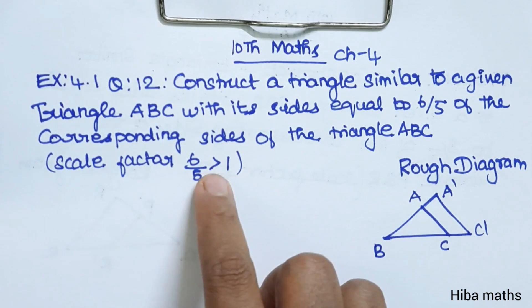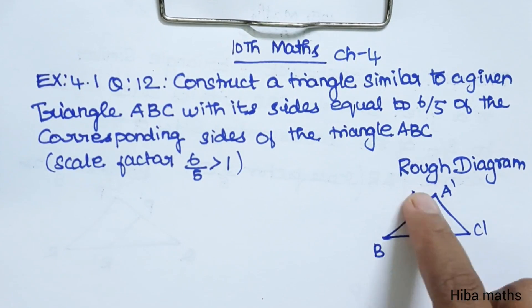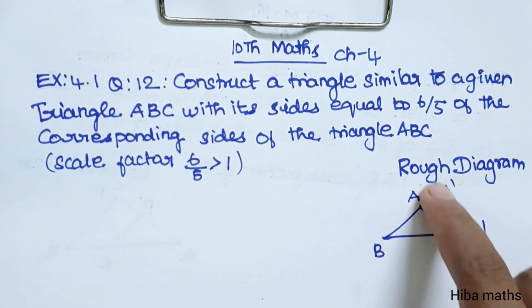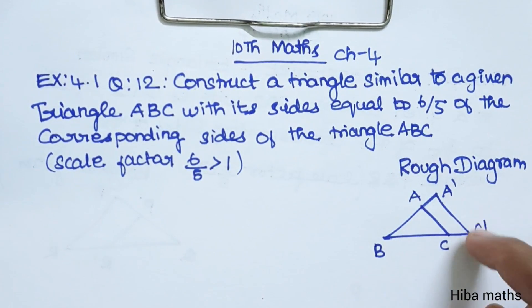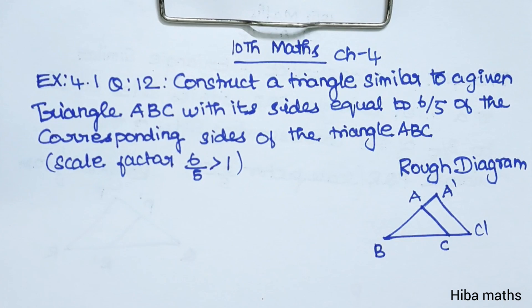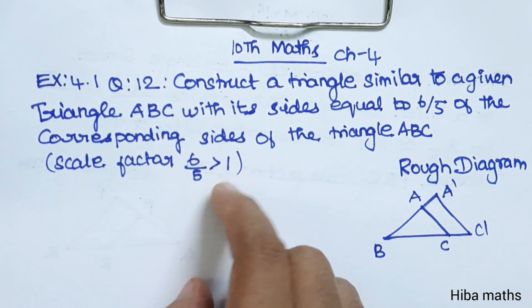Since the scale factor is greater than 1, the new triangle will be A' and C'. A' and C' will be marked accordingly. When the scale factor is less than 1, the construction differs.